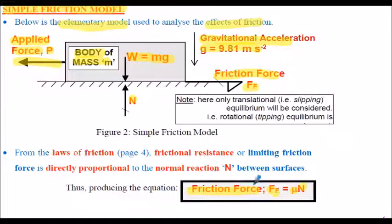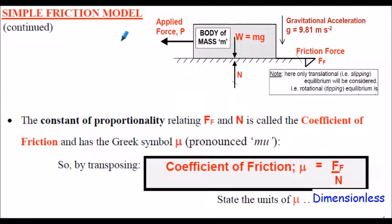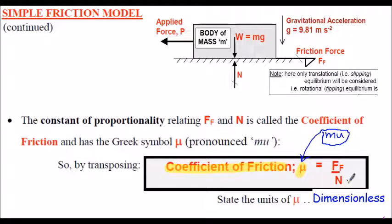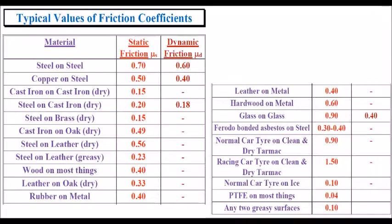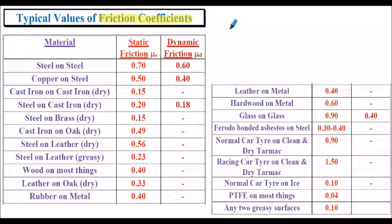Rearranging the formula: mu equals the friction force divided by the normal force. Mu is dimensionless - just a ratio of one force over another. In most cases, the coefficient of friction is found in tables, on the internet, or in reference books. In most design practice questions, you would look it up rather than calculate it. In most questions, the coefficient of friction is given to you.